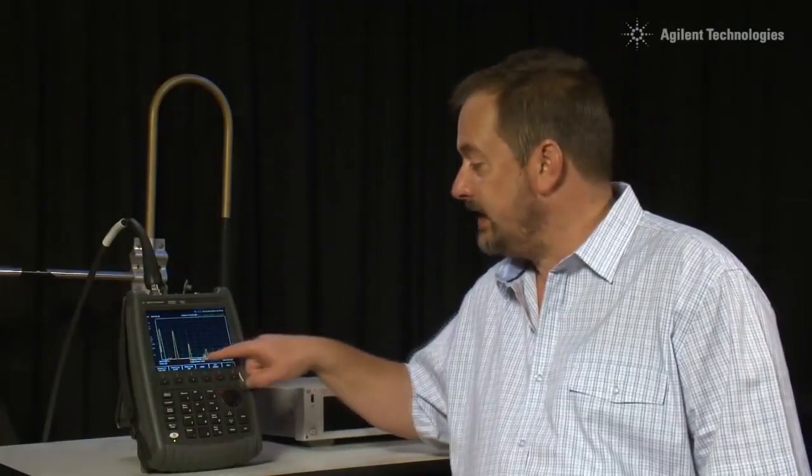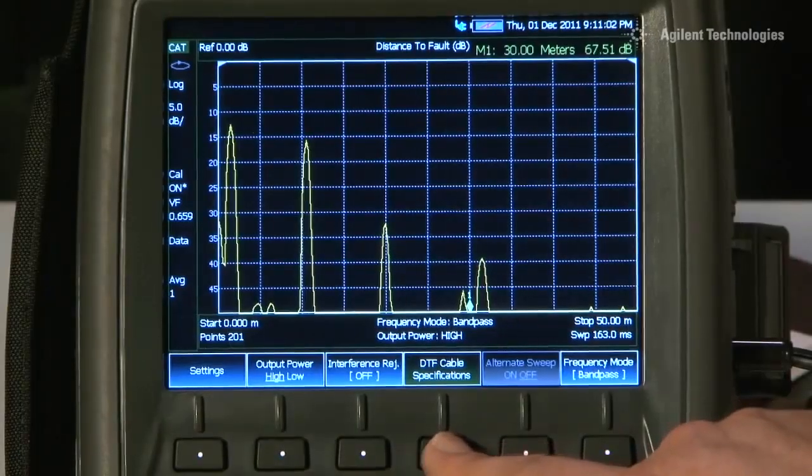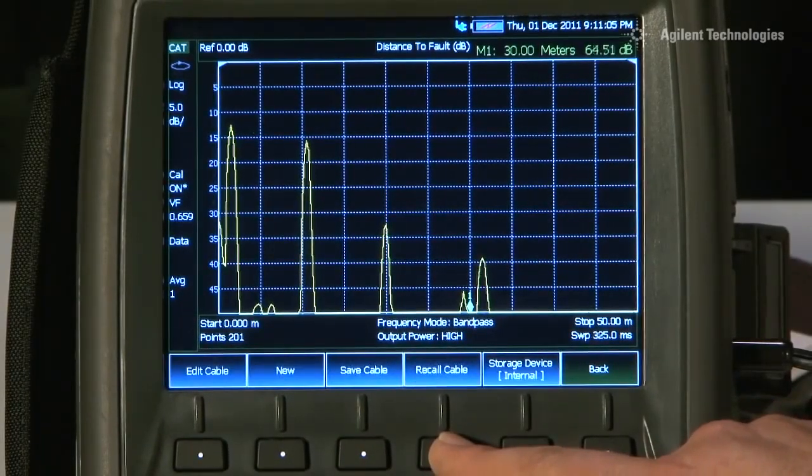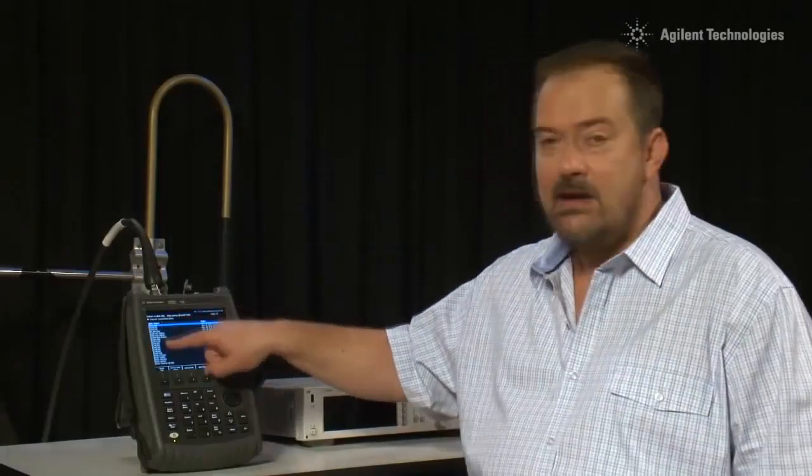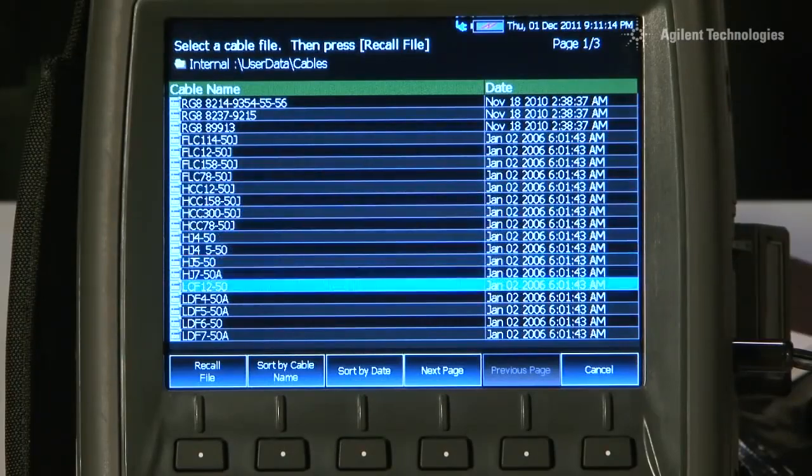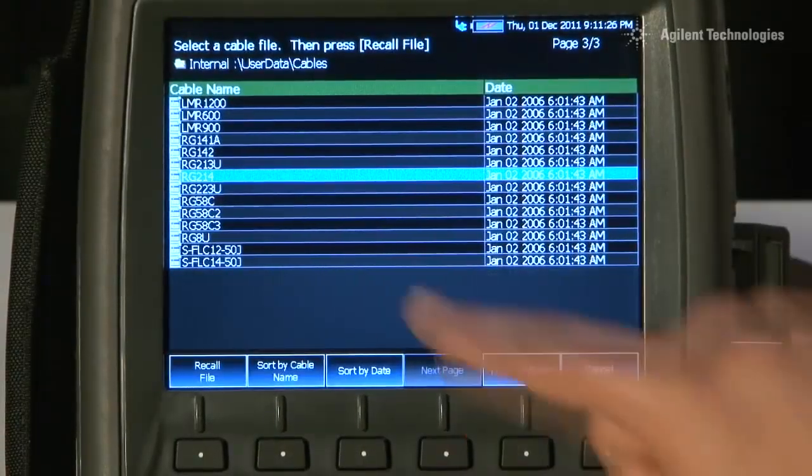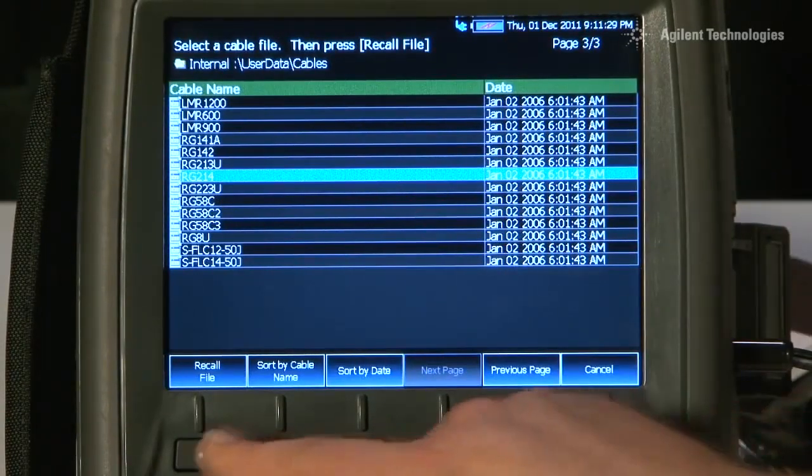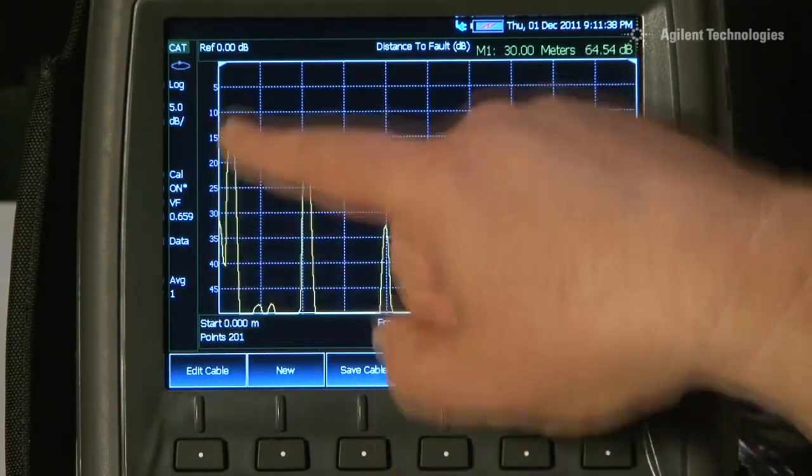Now, to make sure we have got the distance scale set up correctly for this type of cable, I am going to press Measure Setup and press DTF Cable Specifications and we will recall a cable type. You can see here all of the common RF cables and microwave cables are already stored inside the FieldFox. If there is a cable that is not stored inside, you can simply enter the values of velocity factor and attenuation yourself. This is RG214, so I will select RG214 and select Recall File. Now we have a calibrated x-axis display in meters and on the y-axis we are measuring return loss in dB.